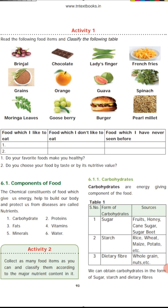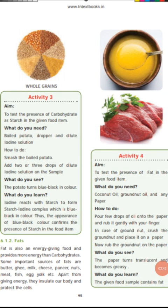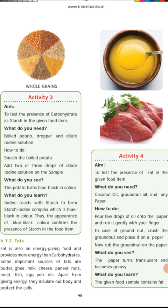Activity 3 is given in your book. We test the presence of carbohydrate as starch in a given food item. We need a boiled potato, a dropper, and dilute iodine solution. Boil and smash the potato, then add two or three drops of dilute iodine solution. You will observe the potato turns blue-black in color. The iodine reacts with starch to form a starch-iodine complex, which is blue-black in color. The appearance of blue-black color confirms the presence of starch in the food item.